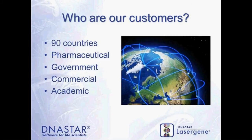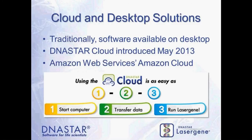We support research going on all around the globe, currently in over 90 countries. We also have customers in the pharmaceutical industry, at government institutions, as well as commercial companies and academic research labs. Traditionally, all of our software has been available on a desktop computer, designed to run on hardware available to most researchers. A computer configured to run complex next-gen assemblies will cost just maybe a couple thousand dollars, so we're set up to run on simple and economical hardware.